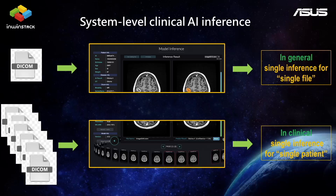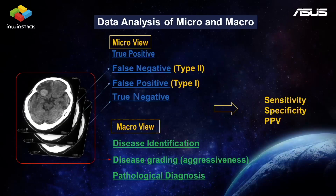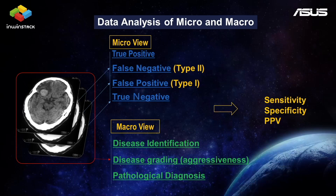The things we care about in clinical are: what disease do you have and how serious is the disease? We can consider the data analysis from two points of view: one is the micro view and the other is the macro view. In micro view, we check results one by one and focus on the performance of type 1 and type 2 errors. In addition to accuracy, type 1 error is important, but type 2 error is also important.